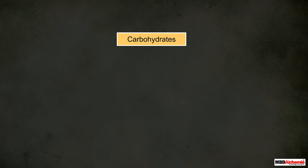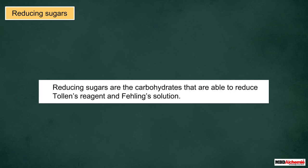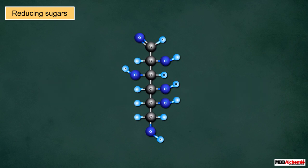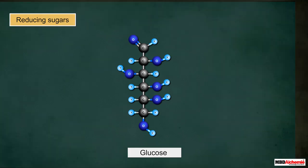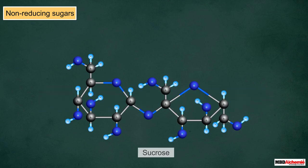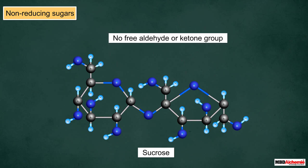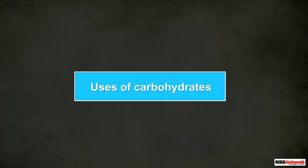Carbohydrates can also be classified into reducing and non-reducing sugars depending upon their ability to reduce Tollens' reagent and Fehling's solution. Reducing sugars are carbohydrates that are able to reduce Tollens' reagent and Fehling's solution — for example, glucose — and contain a free aldehyde group or a ketone group in their structure. Non-reducing sugars are carbohydrates that are not able to reduce Tollens' reagent and Fehling's solution — for example, sucrose — and do not contain free aldehyde or ketone groups.